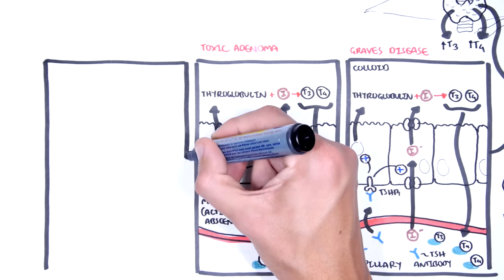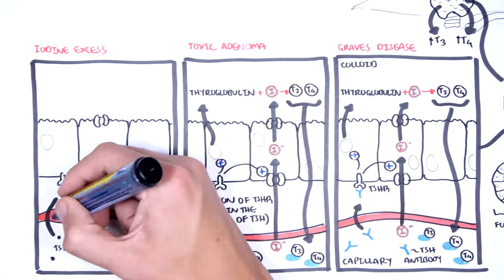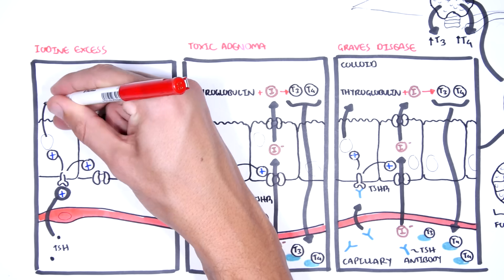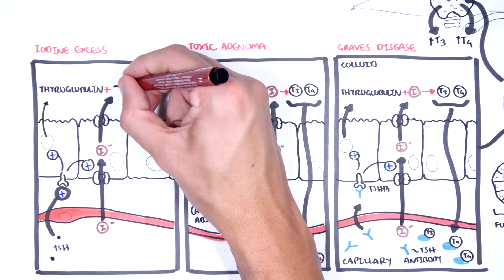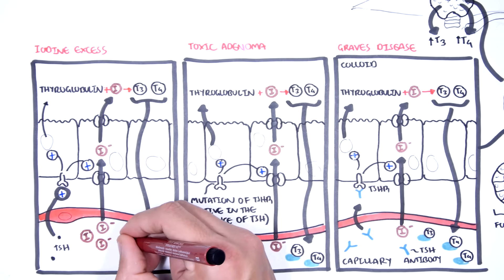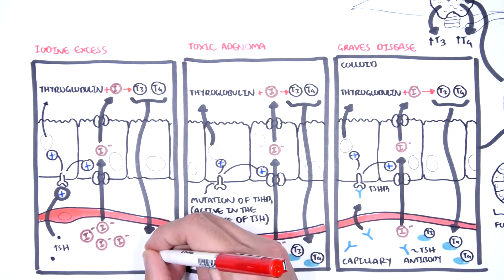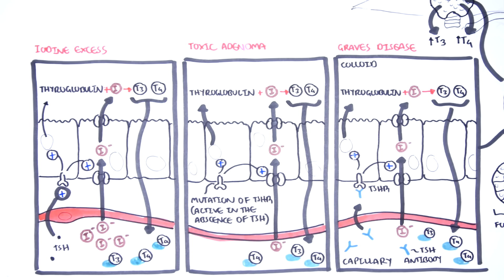Another example, although very rare, is iodine excess. We know that TSH stimulates the TSH receptor, and that iodine is very important in the production of thyroid hormones. If there is a lot of iodine, this will of course shift production to produce more thyroid hormones, resulting in hyperthyroidism.